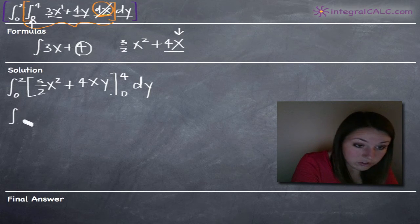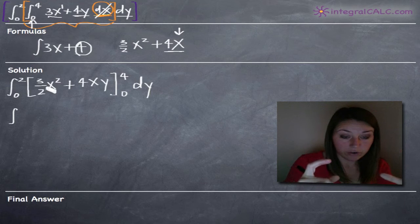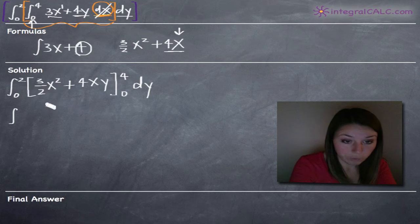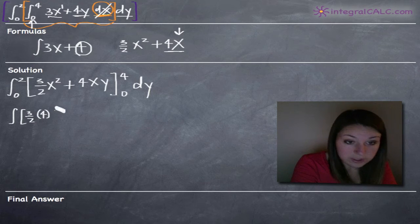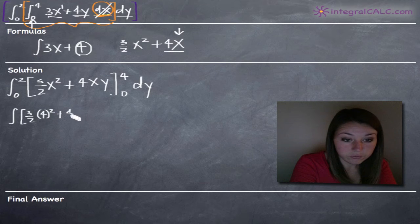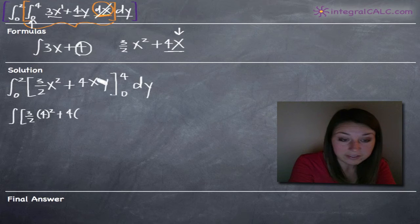So we still need to continue simplifying what's inside of our integral before we go ahead and take the integral with respect to y. So doing so, we'll plug in 4 first so 4 squared plus 4, and we're plugging it in for x because we took the integral with respect to x so we're going to be plugging in for x and leaving y as it is.